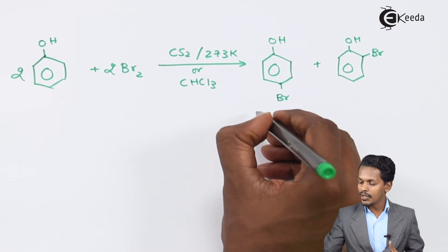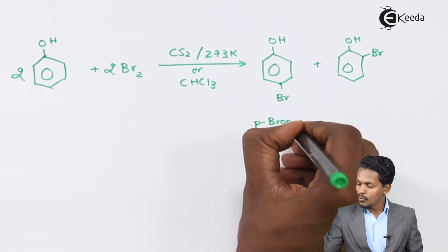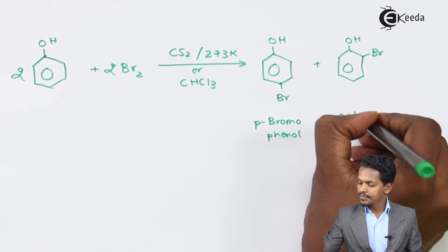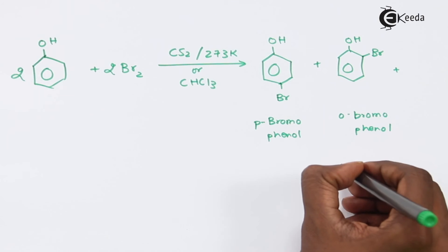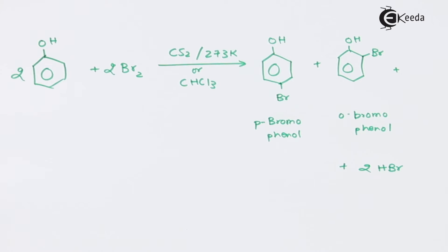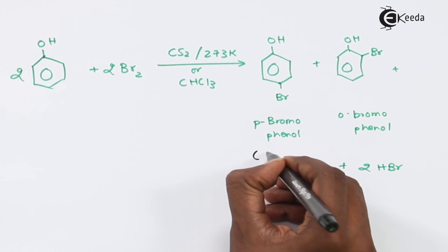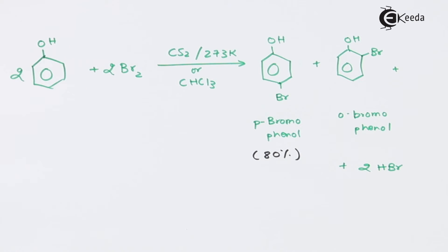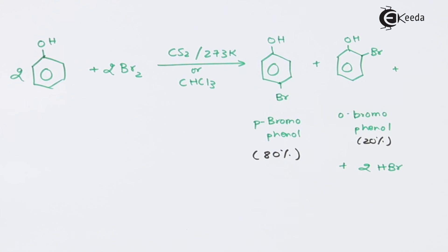So this product is known as para-bromophenol while this is ortho-bromophenol, along with the byproduct that is two moles of HBr. But which one would be the major product? The major product is the para-product and therefore 80% of para-bromophenol would be obtained in the mixture while 20% would be ortho-bromophenol.